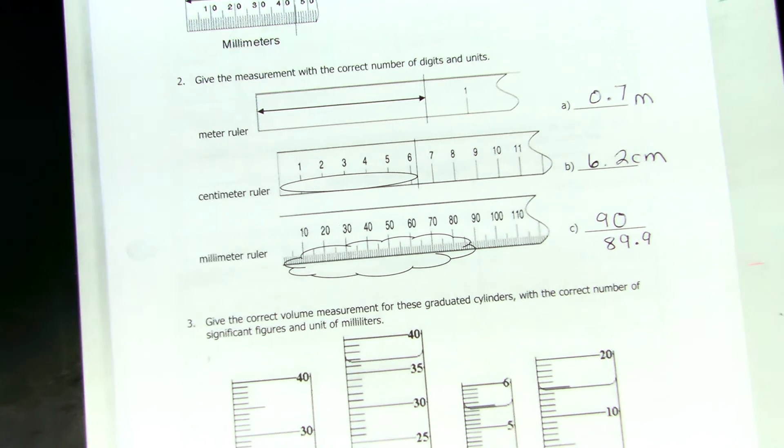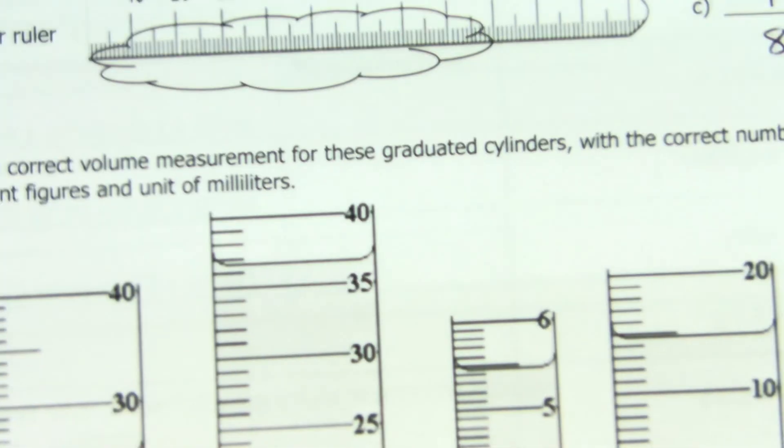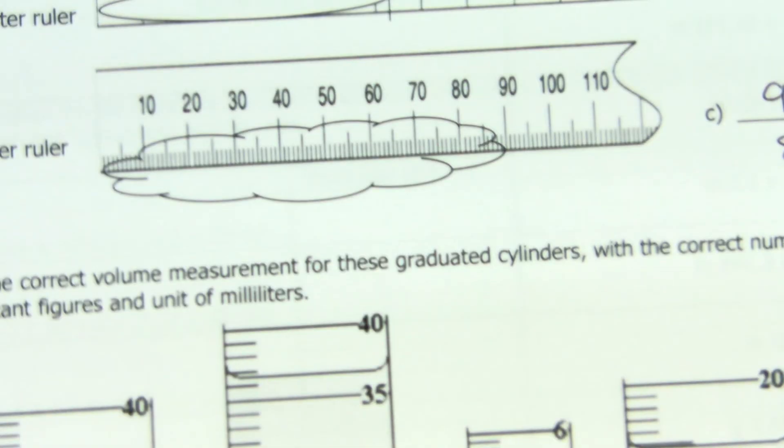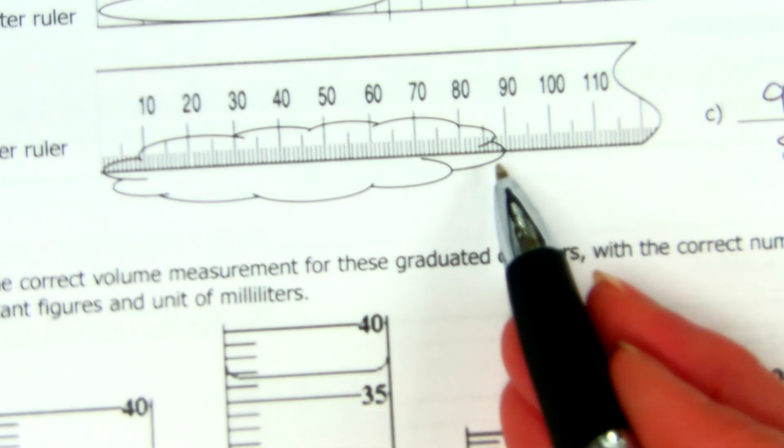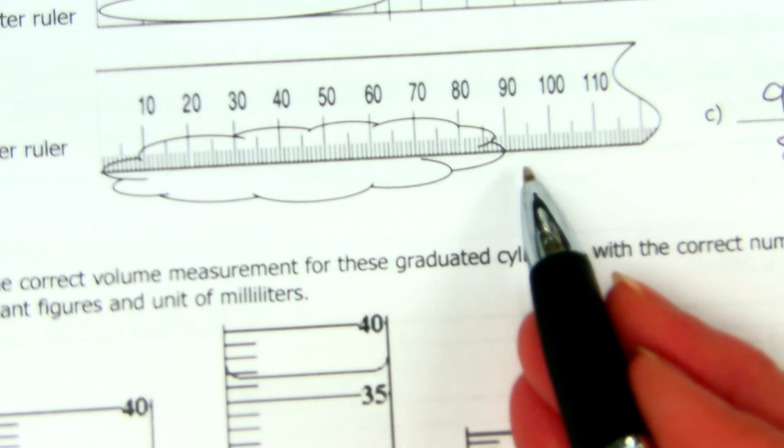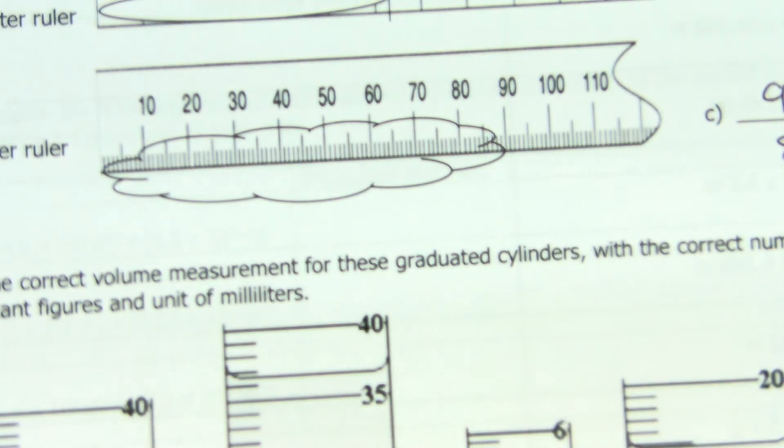Okay, if we look really closely at this ruler, what's the smallest marking on there, here?